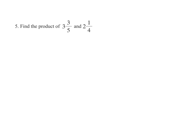Find the product of 3 3/5 and 2 1/4. Before we multiply 3 3/5 and 2 1/4, it may be helpful to rewrite each mixed number as an improper fraction.